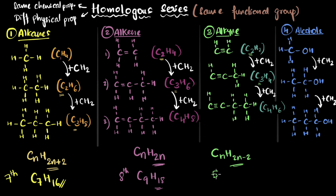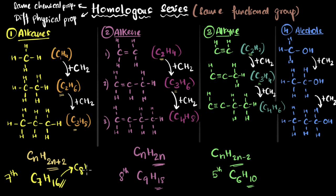What about the fifth member of alkyne? Just like with alkenes, the first member has two carbons, so the fifth member will have six carbon atoms. Using CₙH₂ₙ₋₂ with n = 6, we get C₆H₁₀. If I ask for the next member after C₆H₁₀, we just add CH₂, giving C₇H₁₂. And for the previous member, we subtract CH₂, giving C₅H₈.